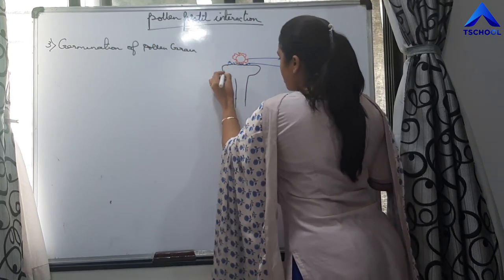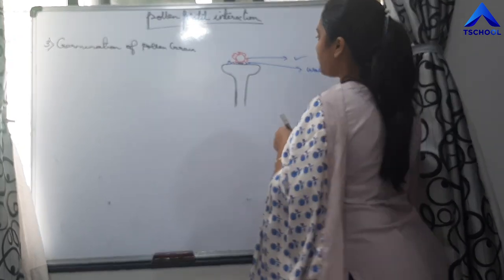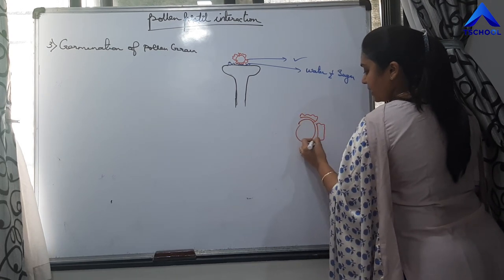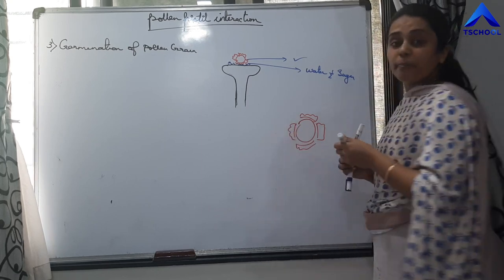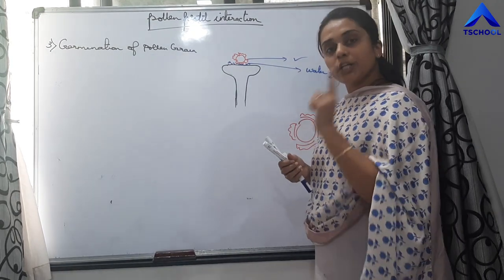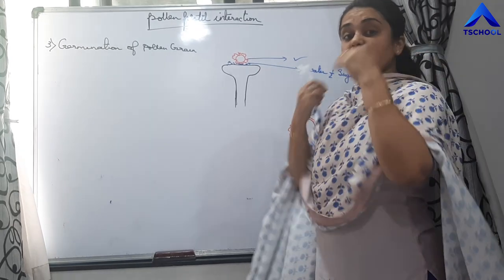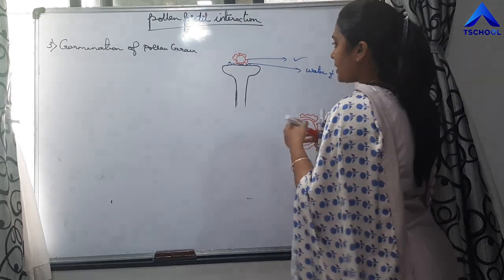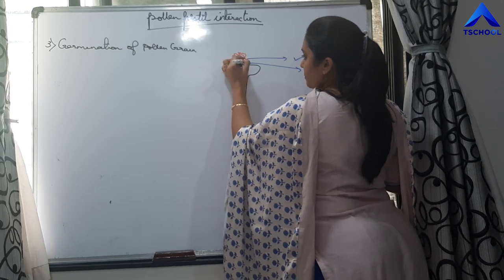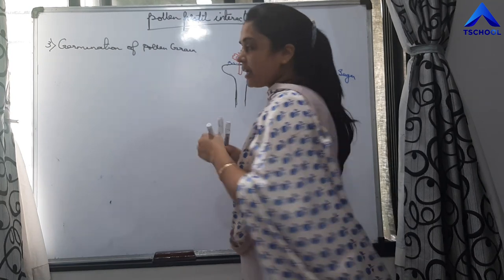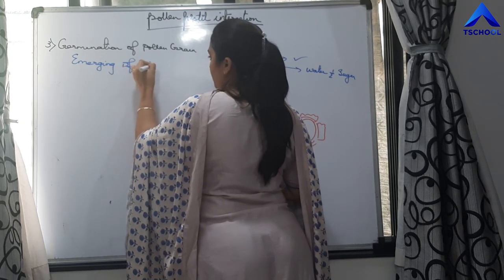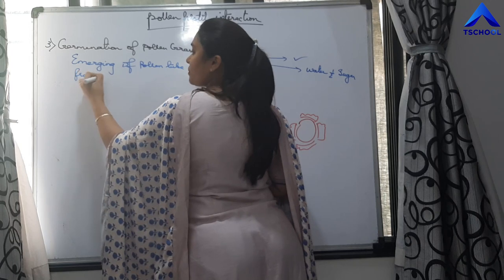Once water and sugar are absorbed, the pollen grain germinates. The pollen grain is surrounded by exine, but there are places where exine is not present — that part is called the germ pore. From the germ pore, a pollen tube emerges, and this emergence of the pollen tube is called germination of the pollen grain.